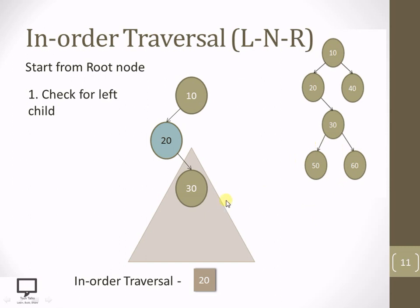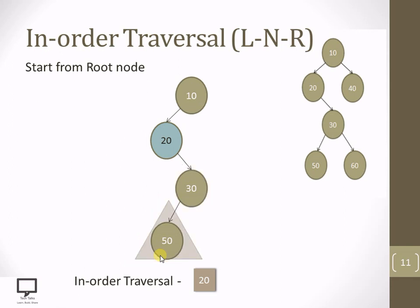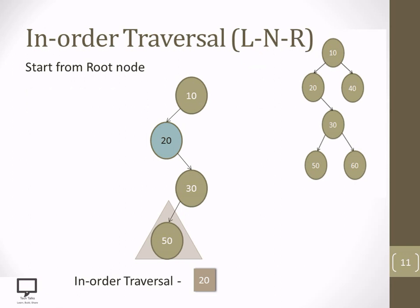And now what we need to do? We need to step down to its left child and now let's make this as the root node. So now 50 is going to become the root node. For 50 as the root node, let's check whether 50 is having its left child or not. No, 50 is not having a left child. Then after checking the left child, what we need to do? We need to process the root node. Processing the root node means we are supposed to display 50.